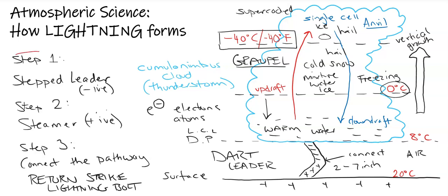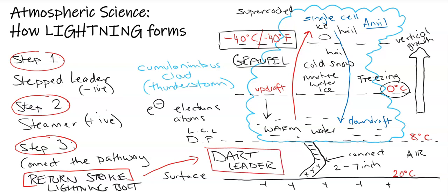We've got step one: stepped leader comes out, negative charge comes out from the cloud. Step two: the return positive ions and charges come up from the ground called a streamer. Step three: the pathway is connected, they meet in the atmosphere which is insulated and we create what's called the return strike which is the lightning bolt. Then multiple dart leaders can use that pathway that's connected, the ionized channel, to have multiple flashes of lightning which can happen in a very short time.